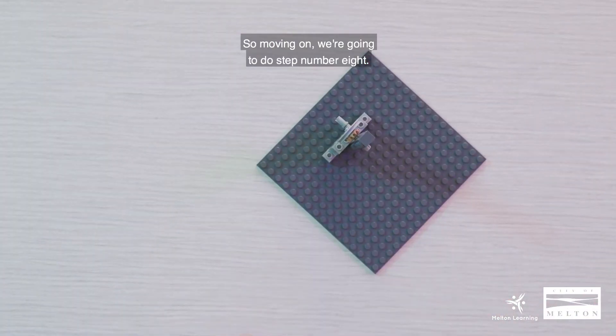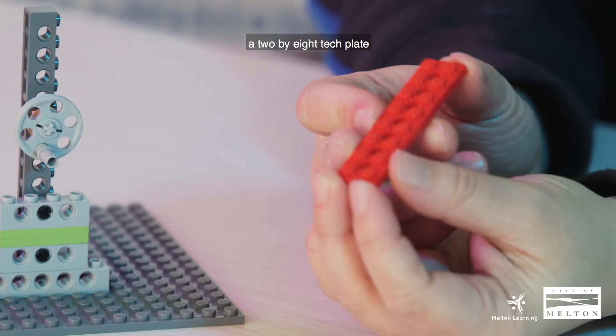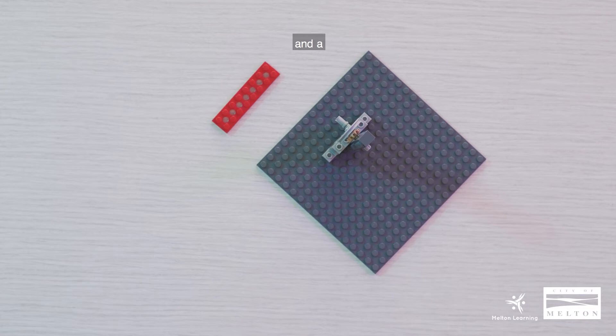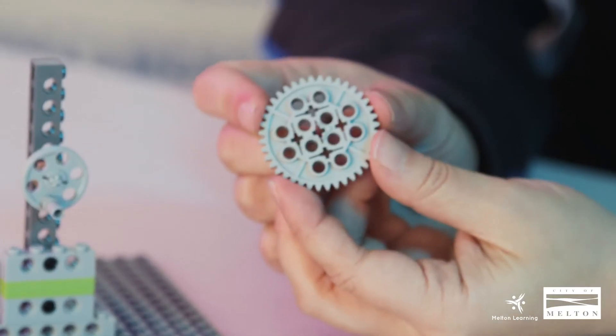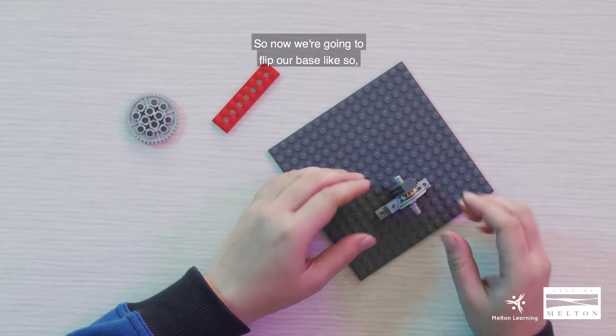So moving on, we're going to do step number eight. We just need one piece of tech plate, a two by eight tech plate, and one piece of the gear forty tooth. So now we're going to flip our base like so.